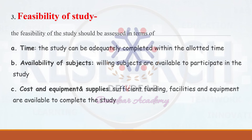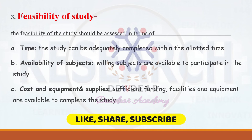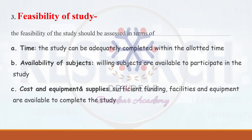The third factor is feasibility of the study, regarding time, availability of subjects, cost, equipment, and supplies. Time means the study can be adequately completed within the allotted time. When choosing a research problem, the study should be completed within the time determined. Availability of subjects means willing subjects are available to participate — the researcher should be able to get participants who are also willing.